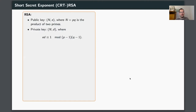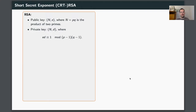Before we dive into CRT-RSA, I would like to have a few words on just RSA. For that, let me quickly fix some notation. As usual in RSA, we denote the public key by a tuple N, E, and the private key by a tuple N, D. We call the two prime factors of N: P and Q.